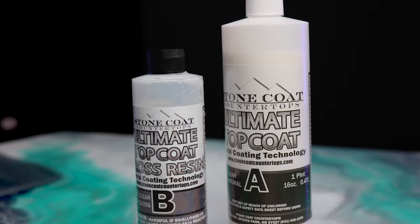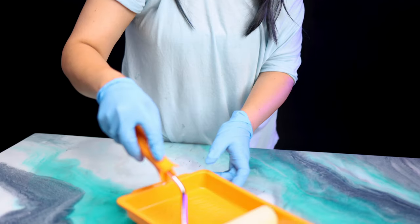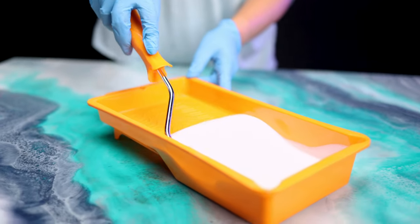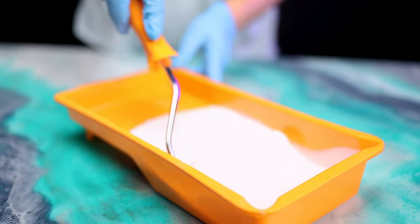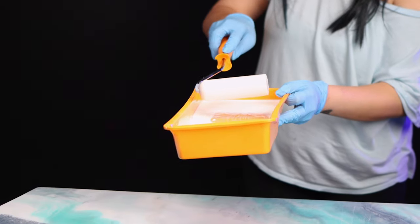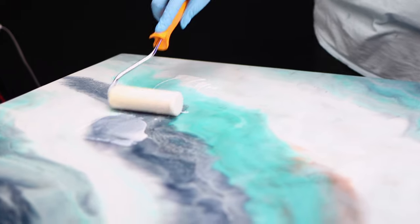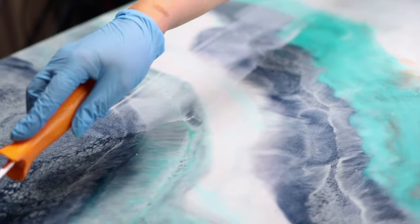Right, now my resin is fully cured and what I like to do on my functional art pieces is to coat it with this product by Stone Coat Countertops. It is an anti-scratch finish and I've gone for a matte finish on this one. This is a product that you apply with a wet roller and then you go over with a dry roller to take off the excess product.